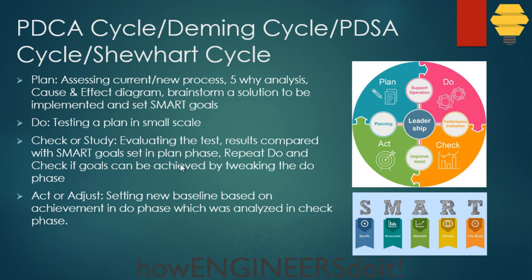Once we achieve the result, we go to the Act phase and set a new baseline. If we are not going back to the Plan phase again, this becomes our new baseline. For example, a company may have a First Time Right of 98% or an On Time Delivery baseline of 95%.